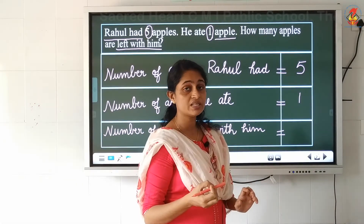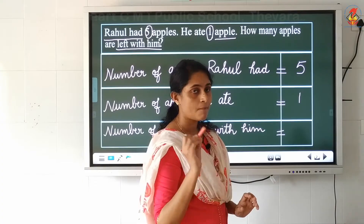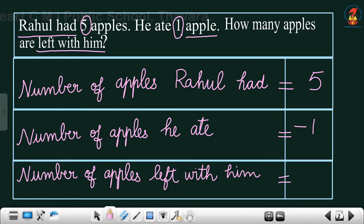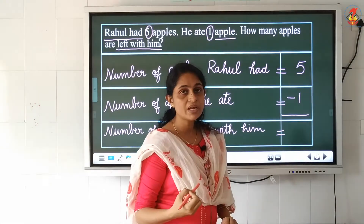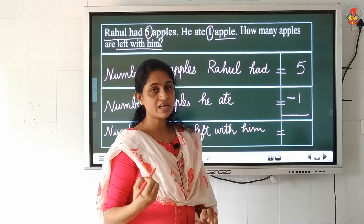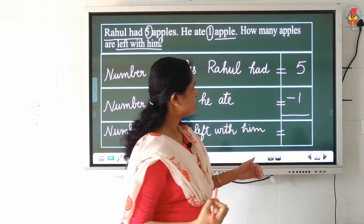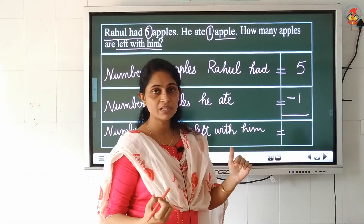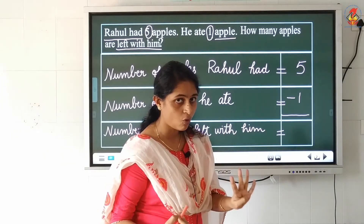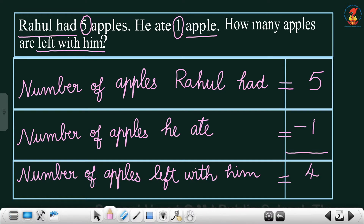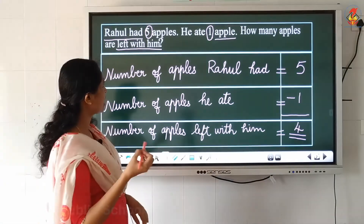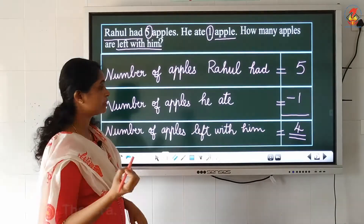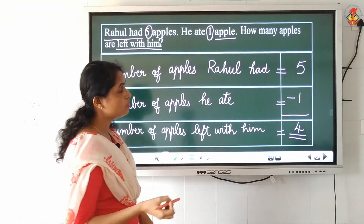Do you remember the symbol for subtraction? It is minus. So here you have to find 5 minus 1. Last class you learned one rule — when we subtract 1 from a number, the answer is the number that comes just before the given number. So 5 minus 1: the number just before 5 is 4. Your answer is 4. Rahul had 5 apples, ate 1, and 4 apples are left with him.